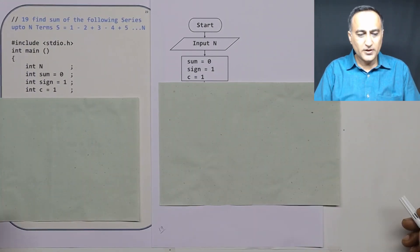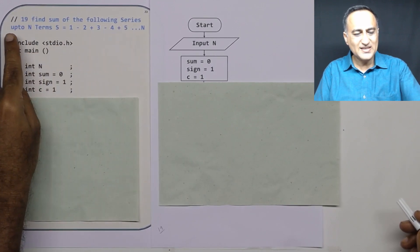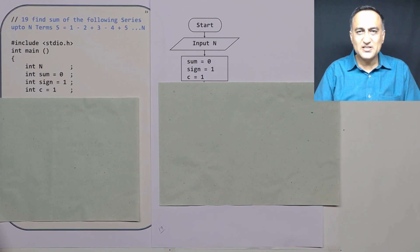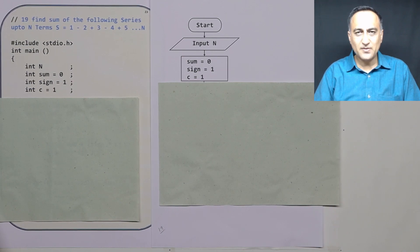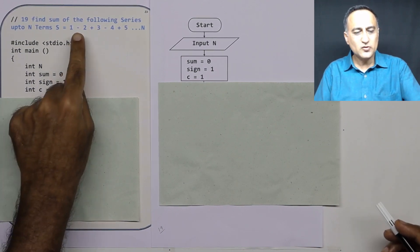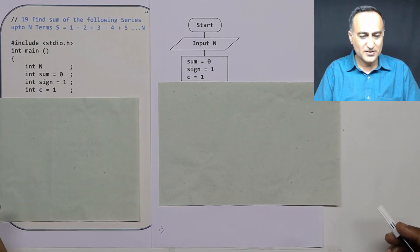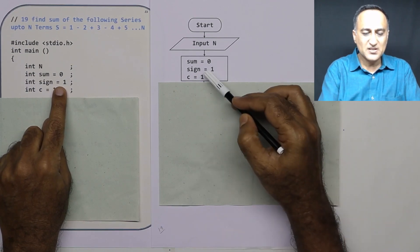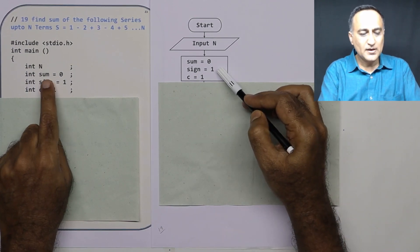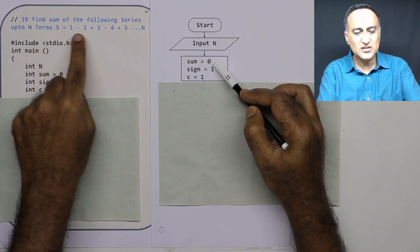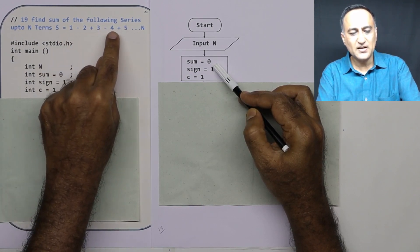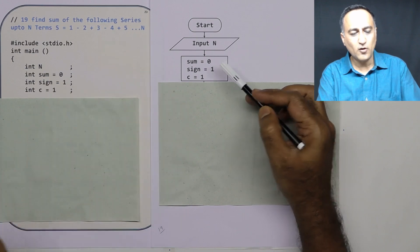In this particular flowchart, we are asked to find the sum of the following series up to n terms: 1 − 2 + 3 − 4 + 5 − 6 + 7 − 8 + 9. The sign alternates between plus and minus, so we use a variable called sign with an initial value of 1. Sum is initialized to 0. The counter c keeps track of the numbers 1, 2, 3, all the way till n.